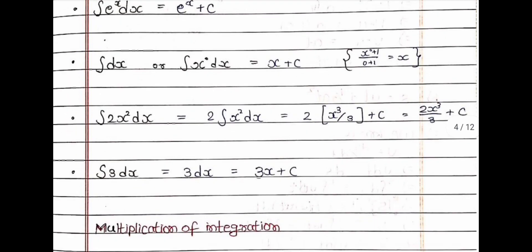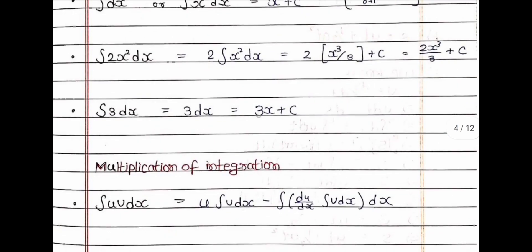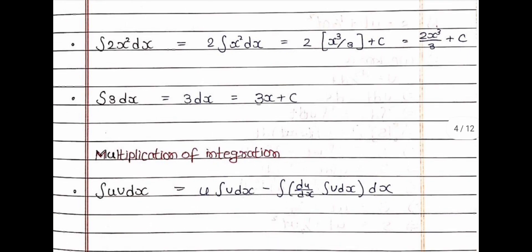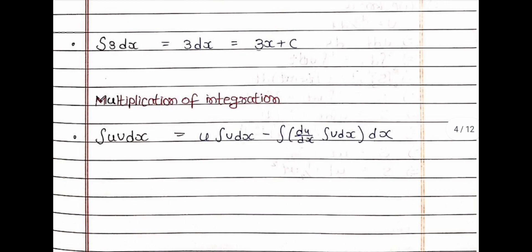For example, integration of 2x² dx = 2 × integration of x² dx = 2x³/3 + c. The last formula: integration of 3 dx = 3x + c. For multiplication, integration of uv dx = u × integration of v dx − integration of (du/dx × integration of v dx) dx.